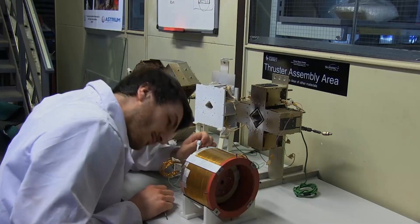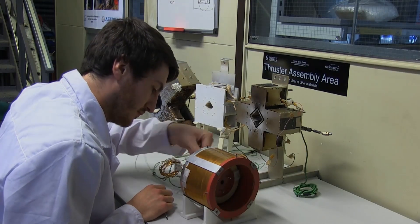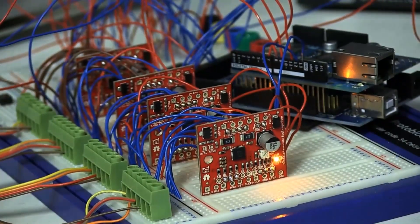Plasma rockets, or ion thrusters, are what researchers at the Surrey Space Centre spend their time inventing, building and testing.